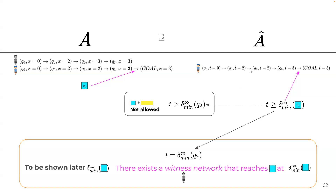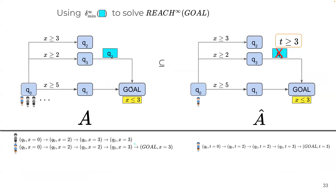For runs where t > delta_min(q2), because we assume location guards have no invariants, the witness process can arrive at q2 at delta_min(q2) and stay there indefinitely. This is possible precisely because we assume no invariant on q2. The other direction of the proof can be shown similarly — I recommend looking at the details in the paper.